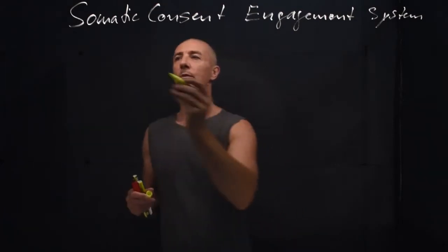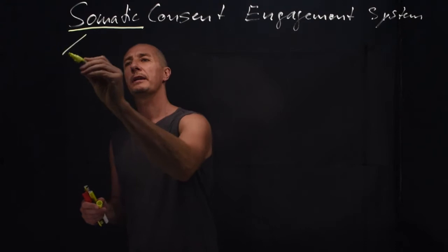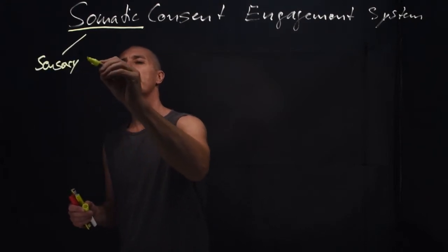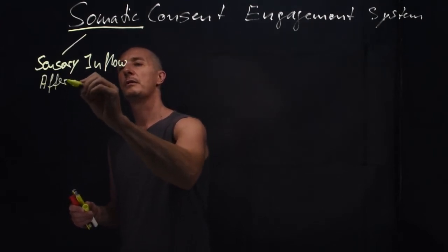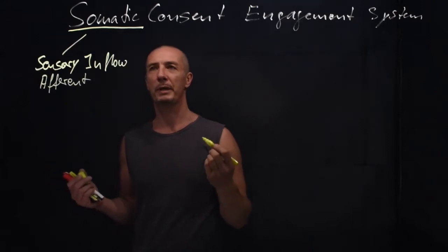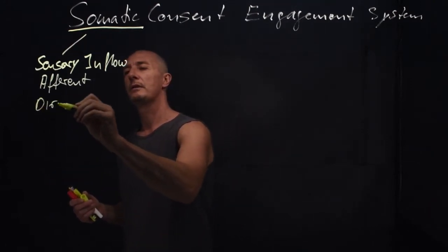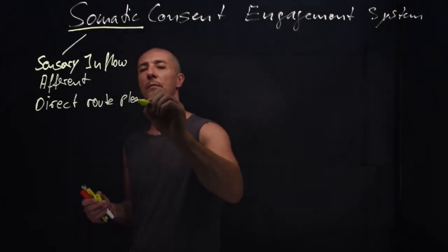So let's start with somatic. Somatic is the sensory inflow, the so-called afferent part of the somatic nervous system. It's what we call the direct root of pleasure.